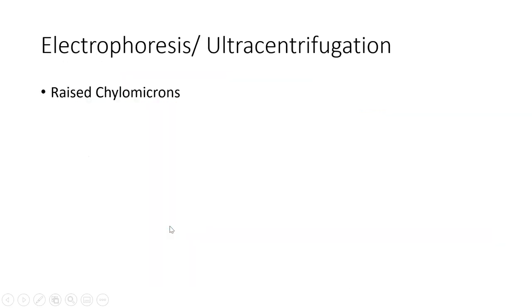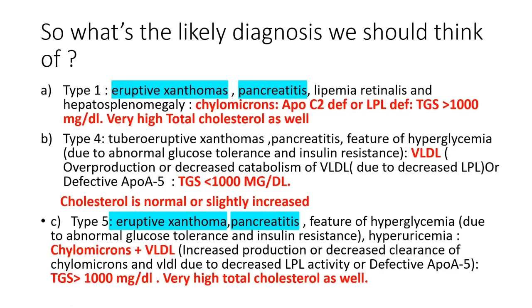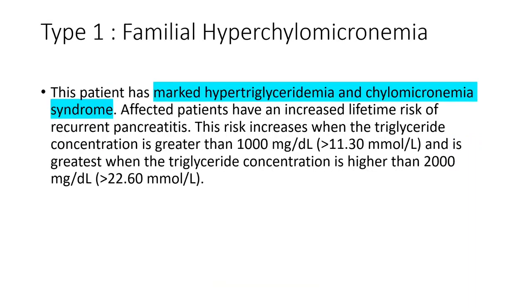How do we differentiate them? On electrophoresis or ultracentrifugation, this patient was found to have raised chylomicrons only. As mentioned, Type 1 will have raised chylomicrons, and Type 5 — a combination of Type 1 and Type 4 — will have chylomicrons plus VLDL. However, in this patient, only raised chylomicrons were found. So the diagnosis is clearly Type 1 hyperlipoproteinemia, also referred to as familial hyperchylomicronemia. There is an increased lifetime risk of recurrent pancreatitis, which was occurring in this patient since age 10. The risk increases when triglyceride concentration is more than 1,000, and is greatest when higher than 2,000 milligram per deciliter — as in this patient.